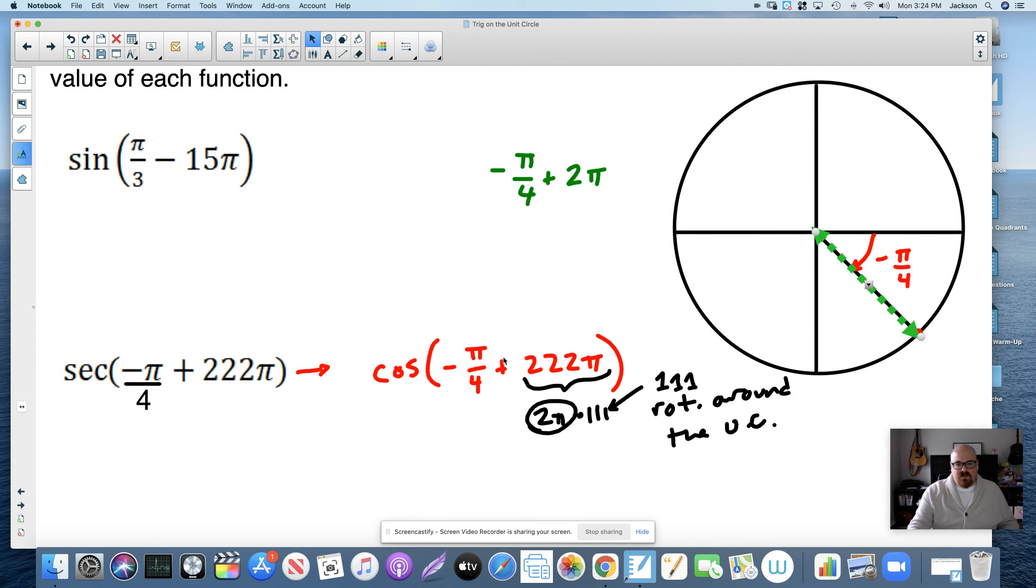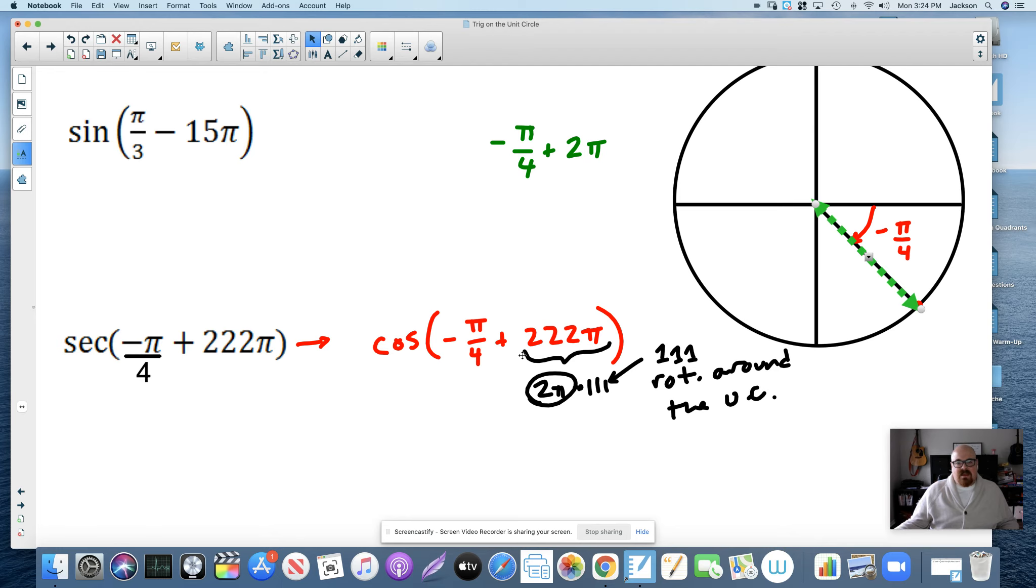So really, if you're looking at this problem, adding an even multiple of pi to any angle gives you a coterminal angle for that. We're not going anywhere. They're not asking us to add this to this. They're saying start at negative pi over 4, which is here, and then rotate 111 times around, and you'd still end up in that spot. So we might as well just use the negative pi over 4 for this.